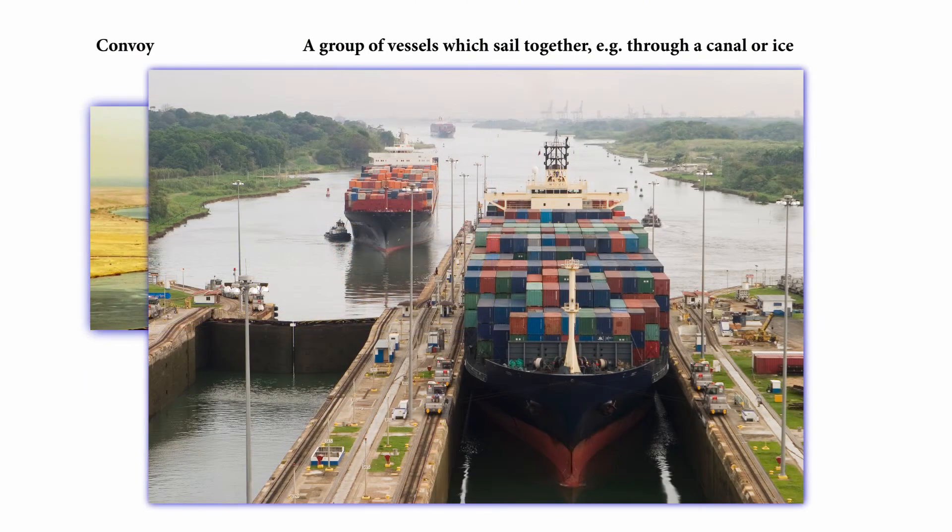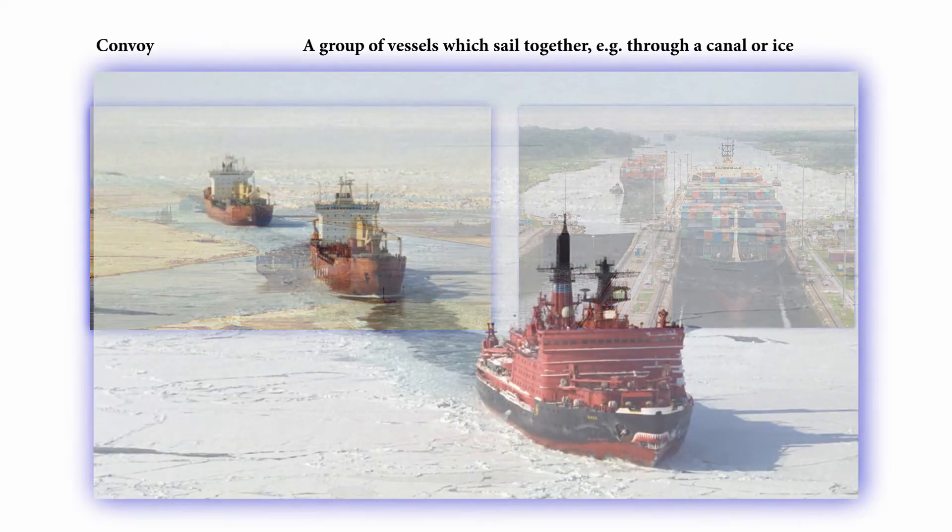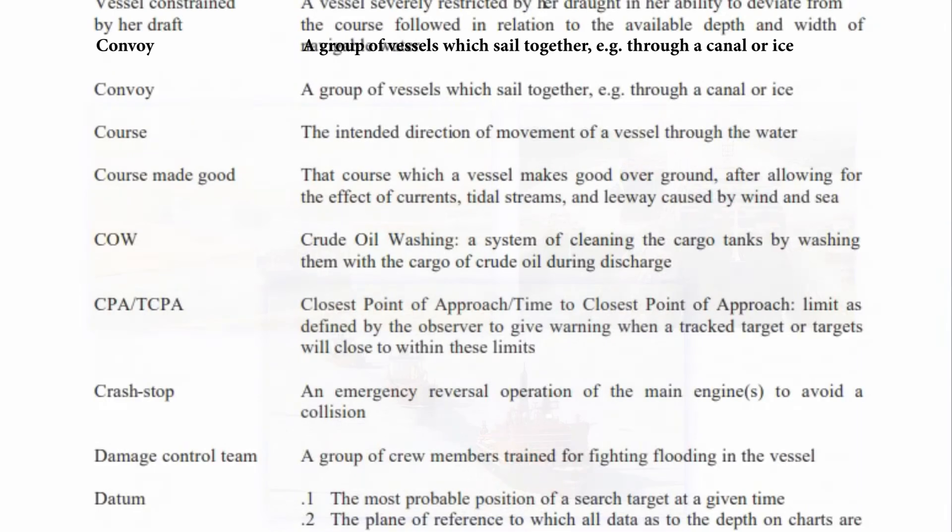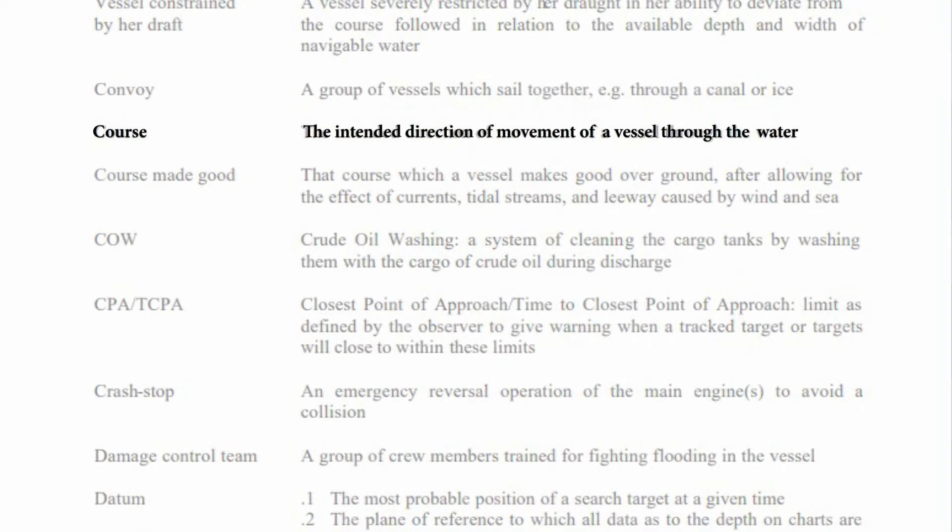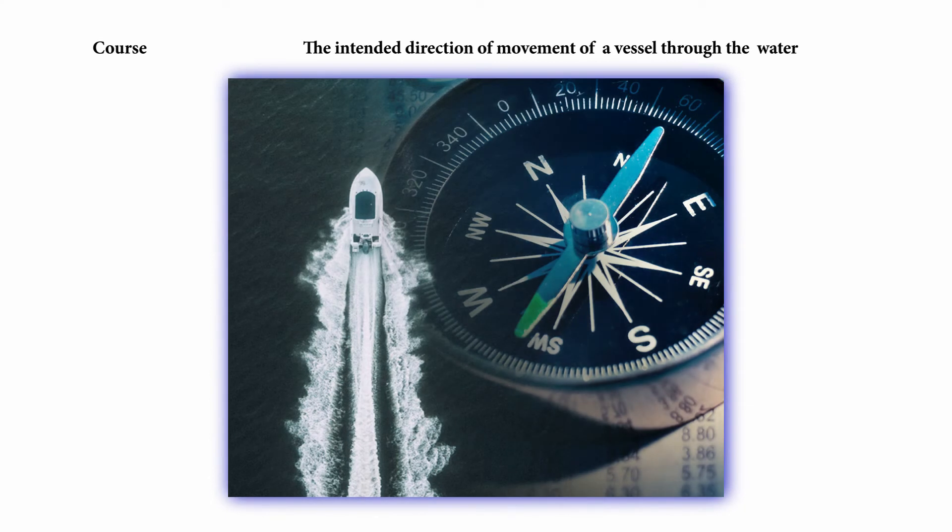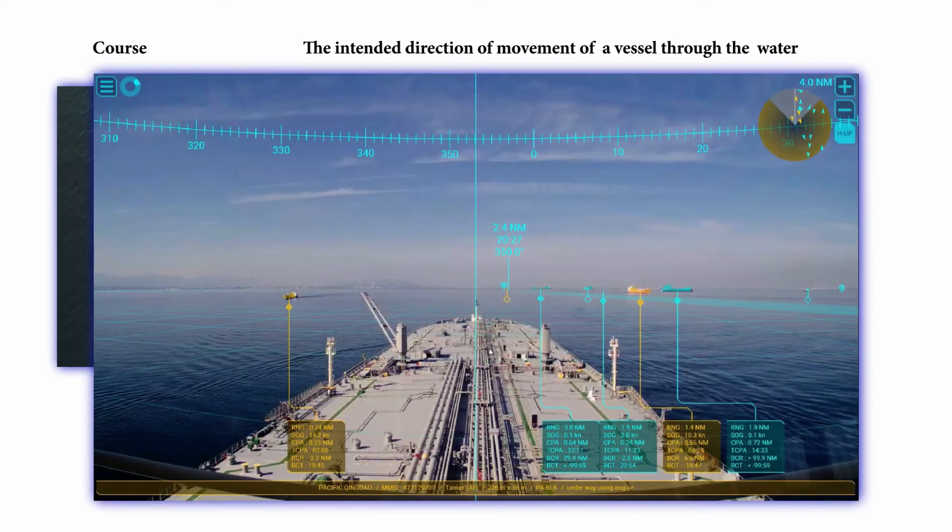Convoy: a group of vessels which sail together, for example through a canal or ice. Course: the intended direction of movement of a vessel through the water.